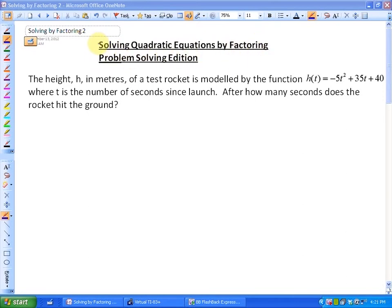In the last lesson what we looked at was solving quadratic equations by factoring, but there were no word problems. In this particular question what it says is the height h in meters of a test rocket is modeled by the function height is equal to negative 5t squared plus 35t plus 40, where t is the number of seconds since launch. After how many seconds does the rocket hit the ground?